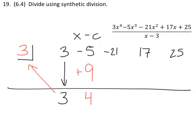Then I take this 4 and multiply it by the 3, which would give me a positive 12. So a negative 21 plus 12 is a negative 9. A negative 9 times 3, which is our c value again, is a negative 27. And that's a positive 17 minus 27 is negative 10.